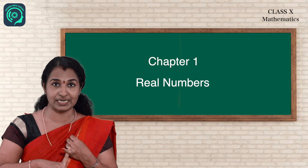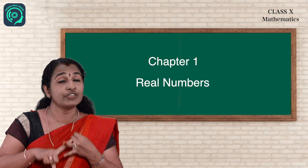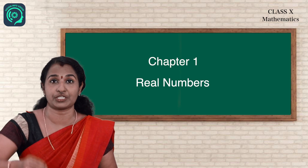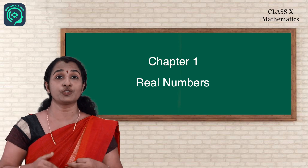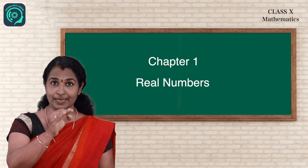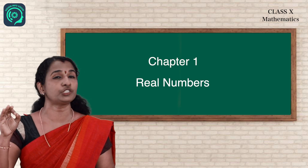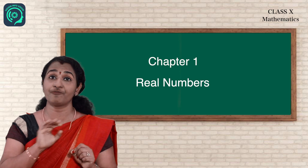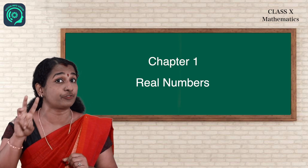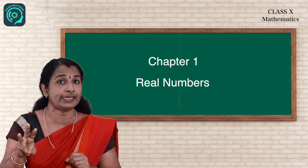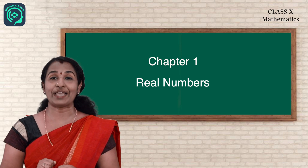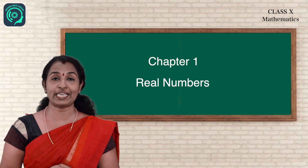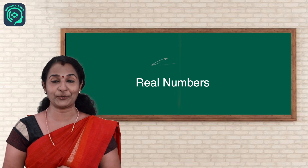In today's module we learnt the Fundamental Theorem of Arithmetic and its objective: to find the LCM and HCF of given numbers. We also learnt the important result that LCM × HCF = product of the two numbers. Remember, this result is applicable only in the case of two numbers. Hope all of you have understood — stay safe, stay healthy, see you soon, bye.